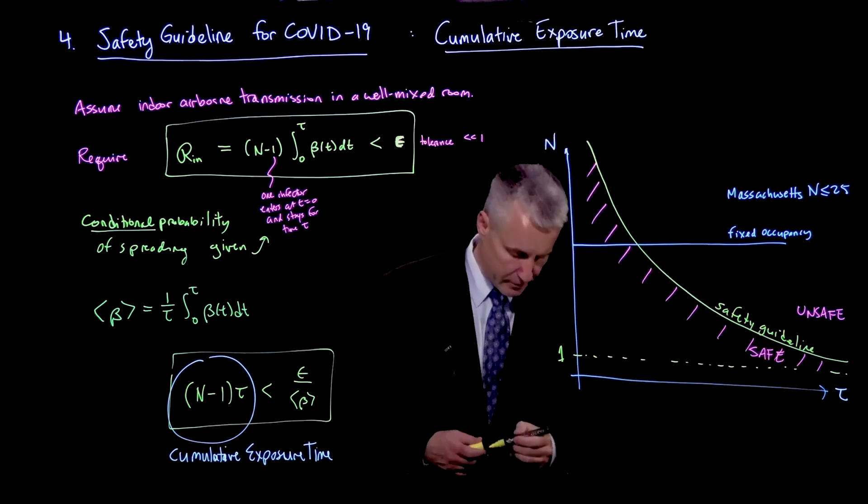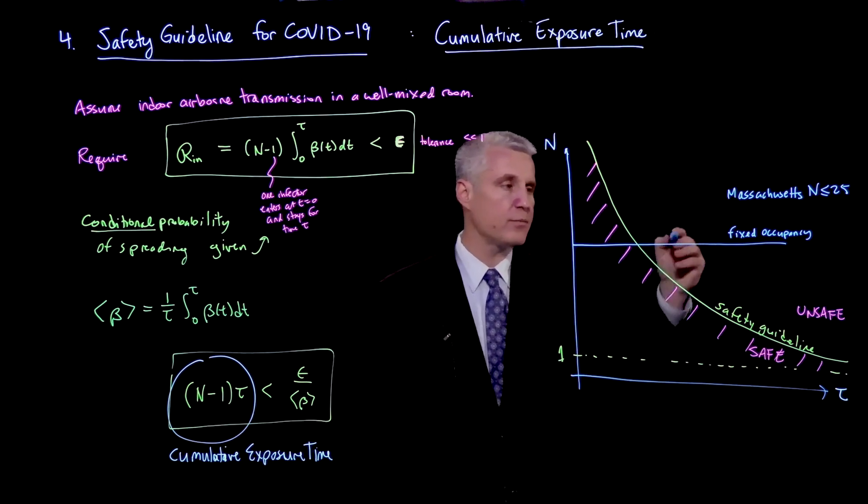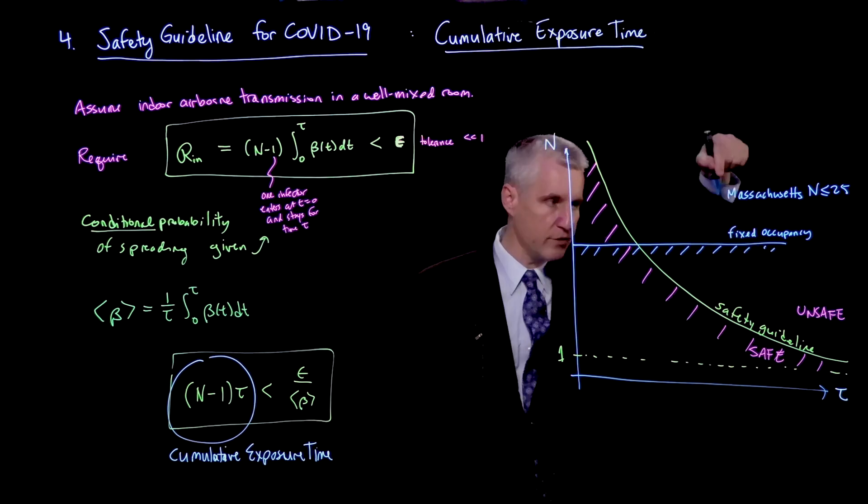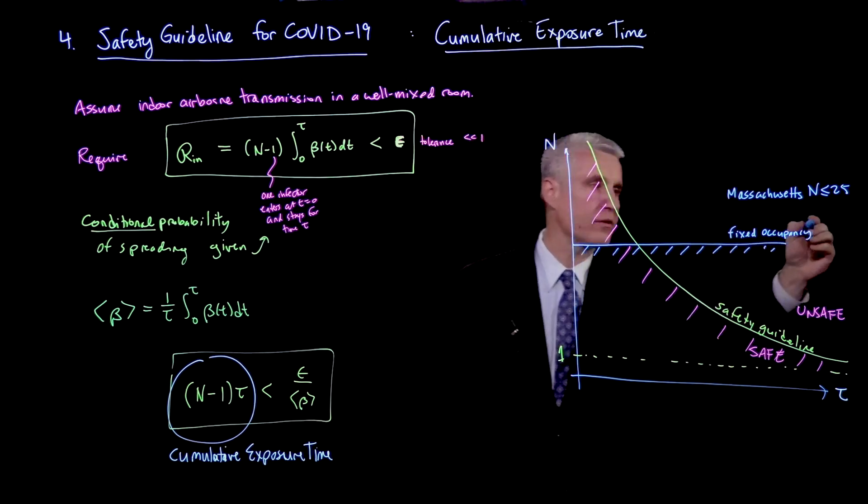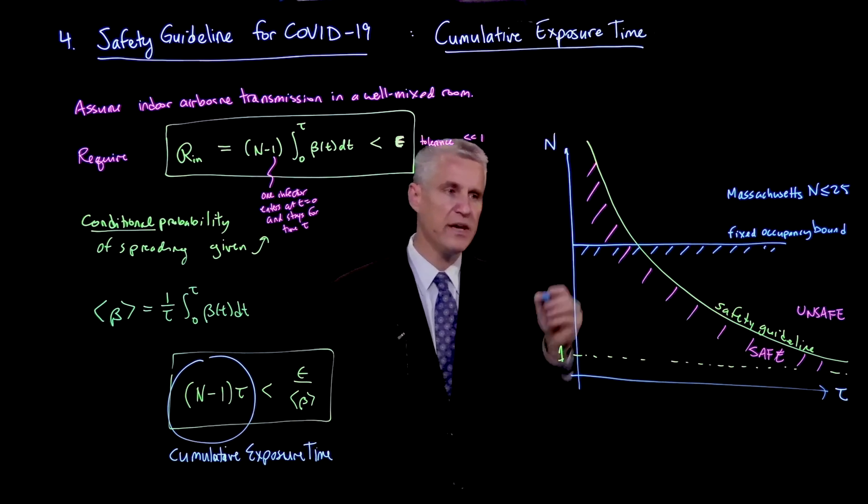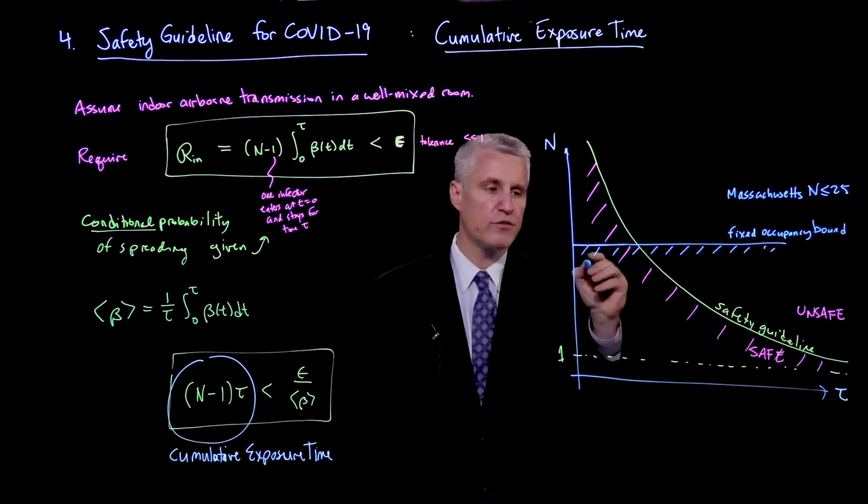So for a short amount of time, the fixed occupancy, which is telling you you should be under this. So basically, you should only have a lower occupancy. So this is a fixed occupancy bound, for example, the one in Massachusetts. At first, this is too conservative.